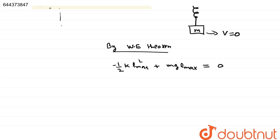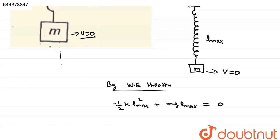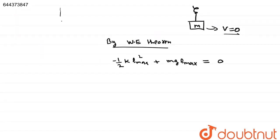That will be equal to 0 because initial and final kinetic energy will be 0 because initial velocity is 0, final velocity is 0, so initial and final kinetic energy will be 0.